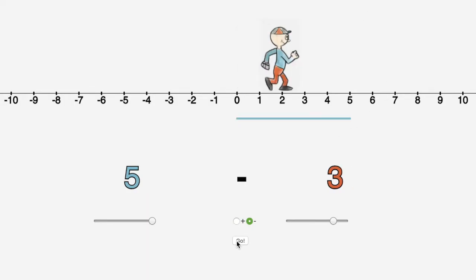When you subtract a number, you walk backwards. Here is Stefan solving five subtract three. Not too hard as he is facing right for both of these.